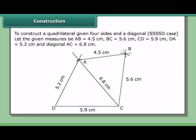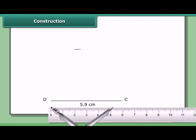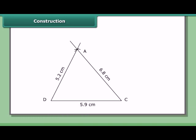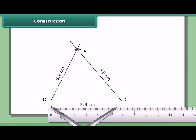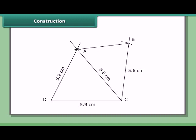The two triangles we can construct to complete the quadrilateral are triangle ADC and triangle ABC. Constructing triangle ADC: with C as center and radius 5.6 cm, draw an arc on the other side of AC. With A as center and radius 4.5 cm, draw another arc to cut the previous arc at B. Join CB and AB. Then ABCD is the required quadrilateral.